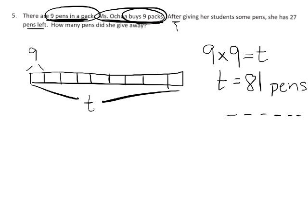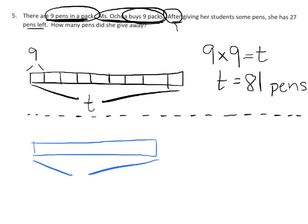And then, now we're going to work on the after. It says, after giving her students some pens, she has 27 pens left. So, what is my model going to look like? And I'm going to do it in blue. So, I've got my total here, and my total is 81. And it says, after she gave some pens away, she has 27 pens left. So, I'm going to do a bar right here, and she has 27 pens left. So, I'm going to put left, and this she gave away.